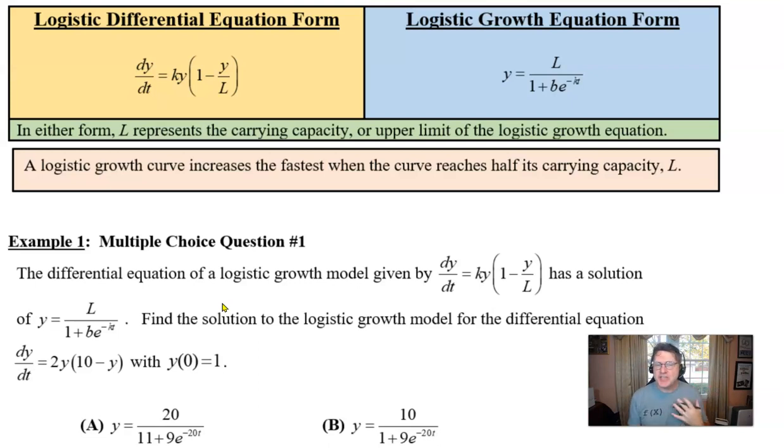A couple of notes here. In either form, L represents the carrying capacity. That would be the upper limit of a logistic growth, the highest value that your y or p or whatever your dependent variable can take on. It might be worth mentioning, a logistic growth curve increases the fastest when the curve reaches half of its carrying capacity. You're not going to use that in example one or two.